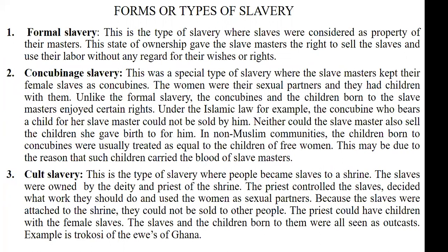So what are the types of slavery that existed in Africa? The first type is formal slavery. Formal slavery is the type of slavery where the slaves were considered as property of their masters. They were owned by their masters, so their masters decided whatever they wanted to do with them. They could sell them at any given time, asked them to work whatever kind of work they desired, and had no regard for their rights as human beings.